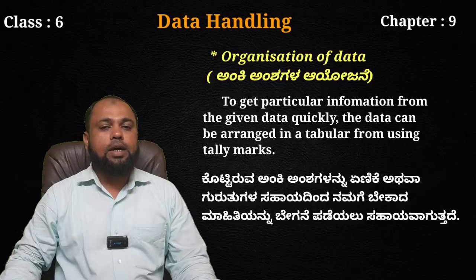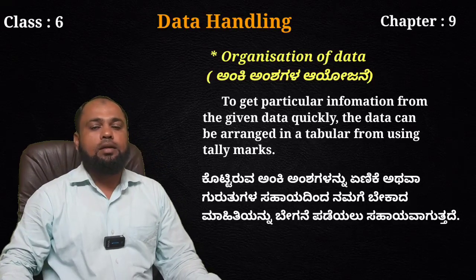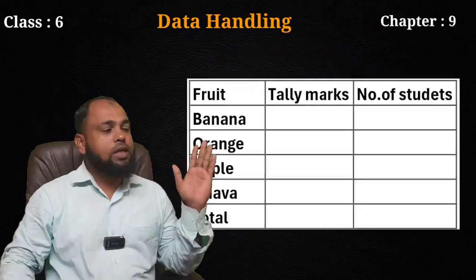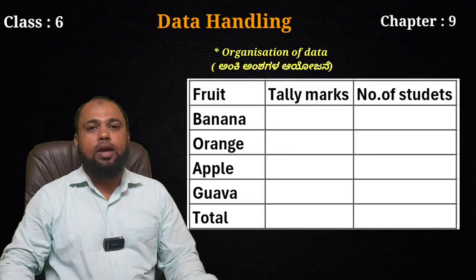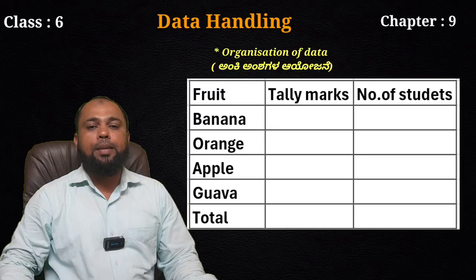For example, using the same example we have already seen, the data can be interpreted using a tabular column. The 8 students can be represented using tally marks like this.